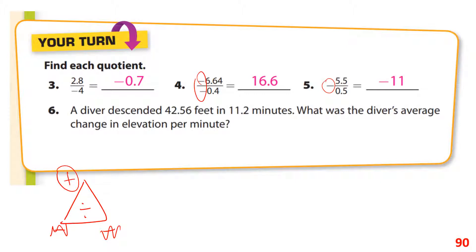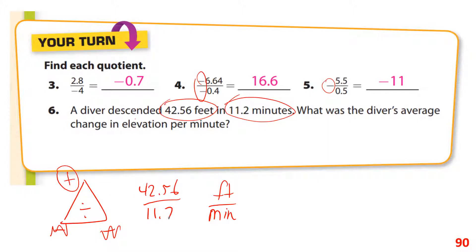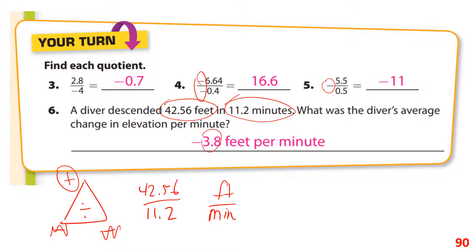A driver descended a certain number of feet in 11.2 minutes. What was the driver's average change in elevation per minute? That's feet per minute, so it's 42.56 divided by 11.2, which gives 3.8 feet per minute. It's negative because you're descending — going down. Writing it as negative 42.56 divided by 11.2: negative divided by positive is negative.